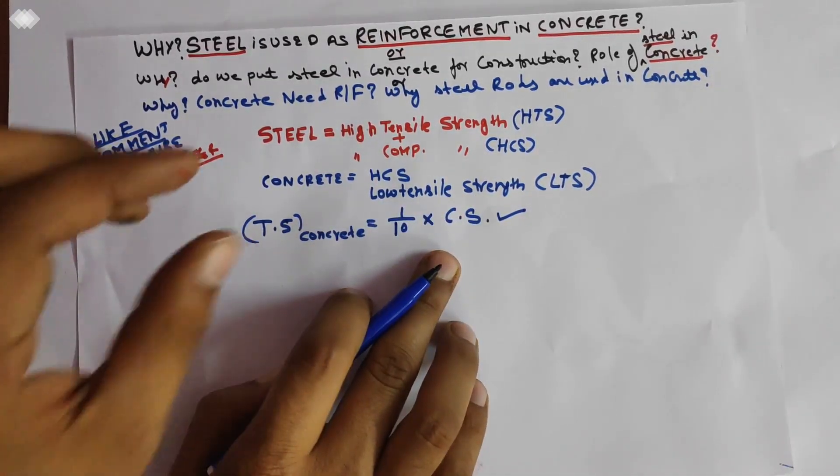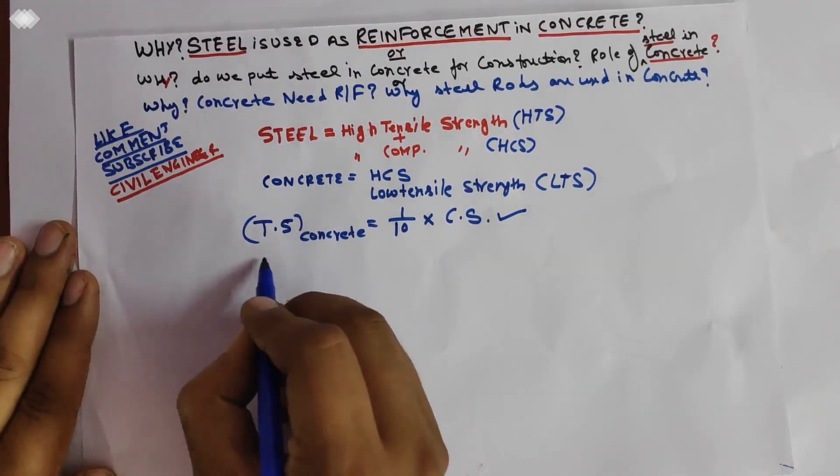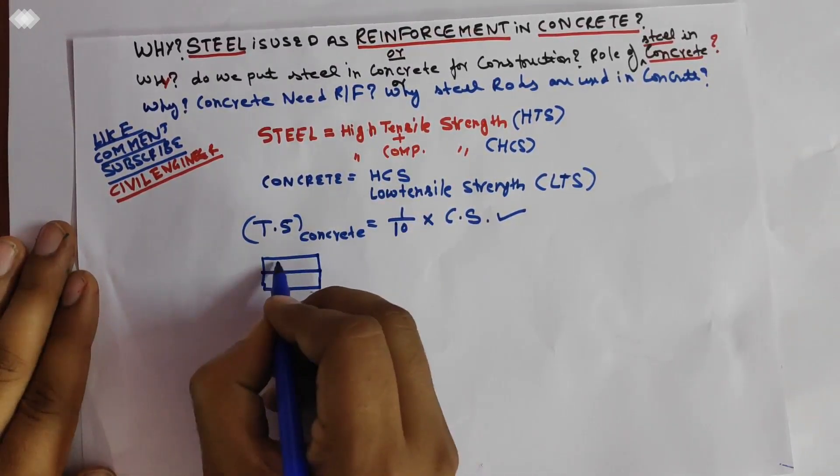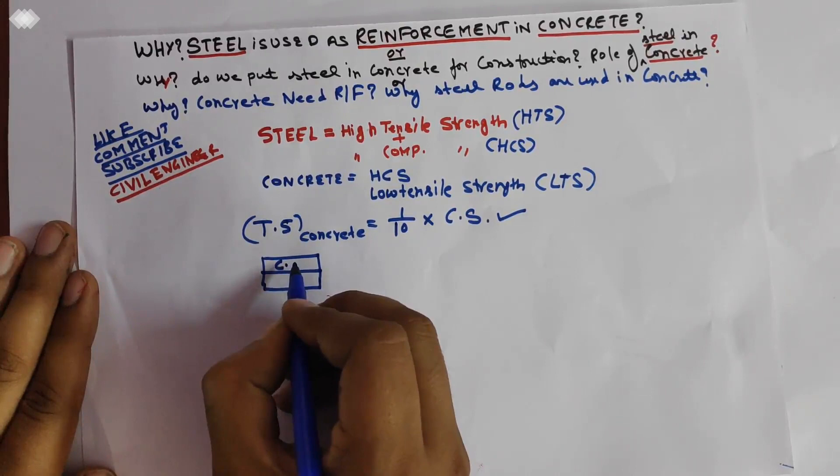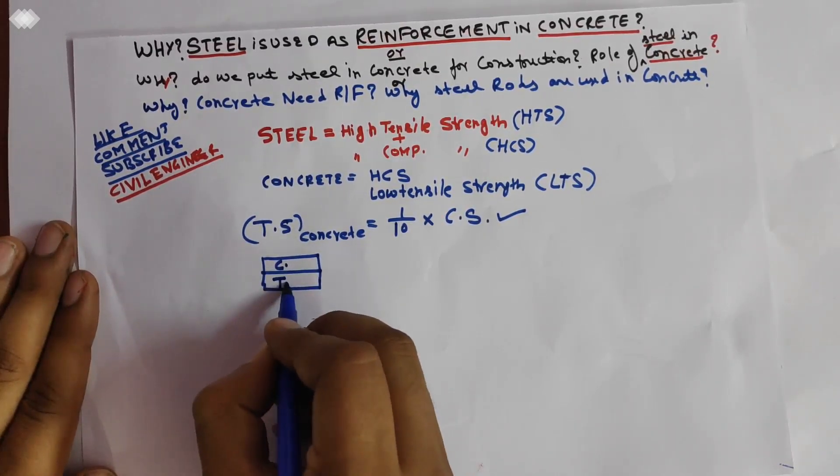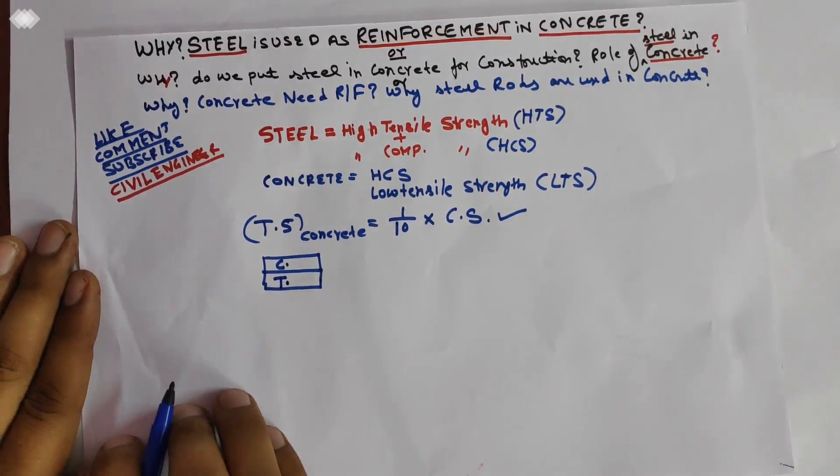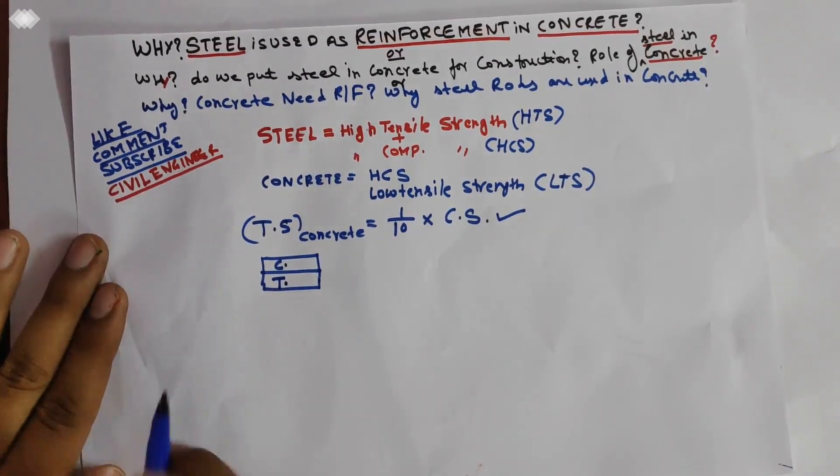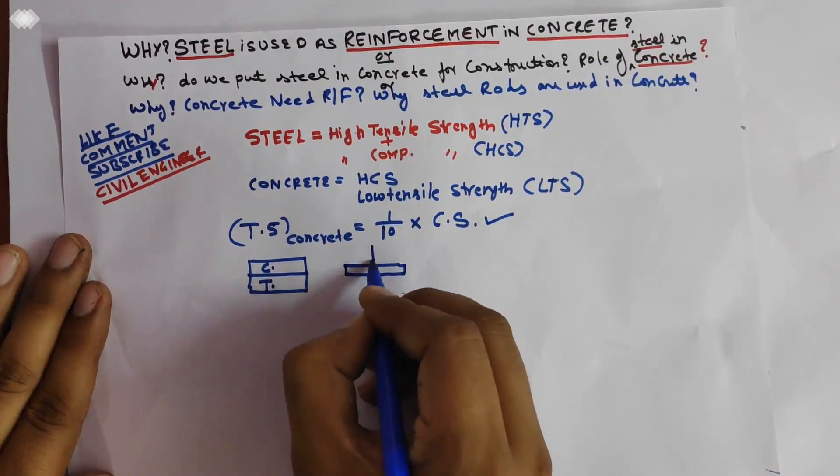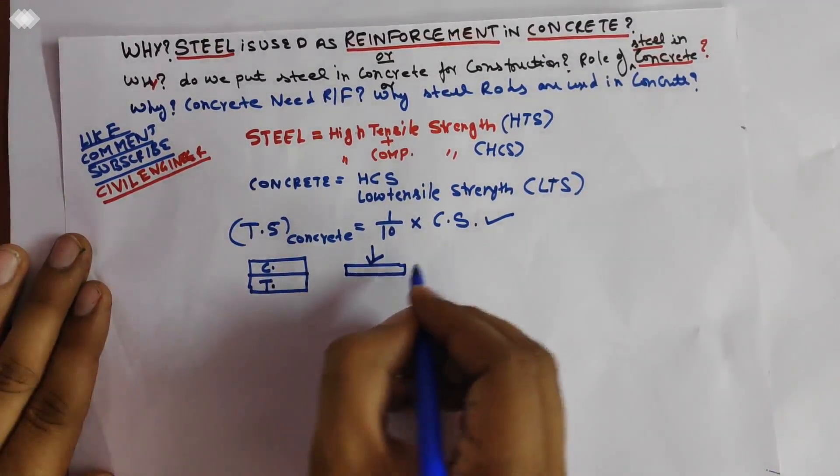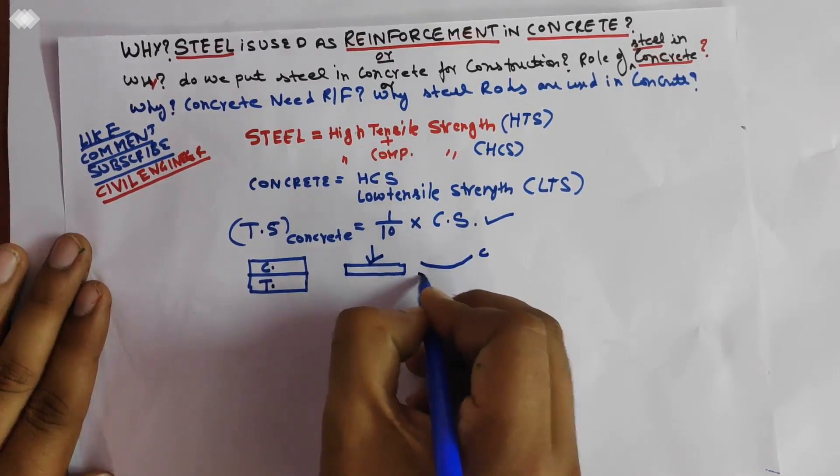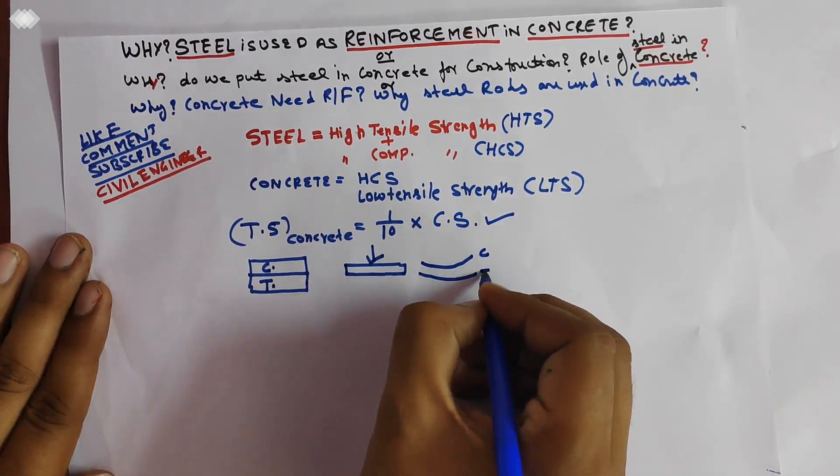This is a beam section. The upper part is in compression, the lower part is in tension. So when the load comes, this part is in compression and this part is in tension.